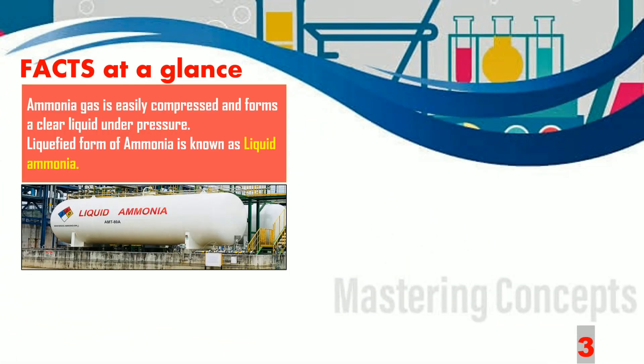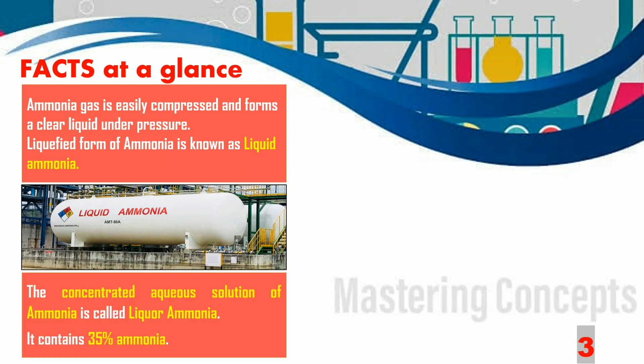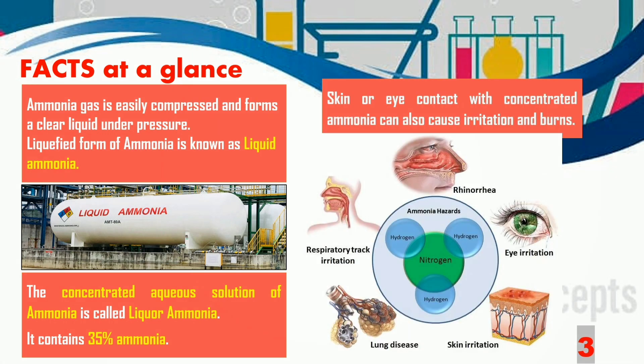Ammonia Gas can be easily compressed and it forms a clear liquid under pressure. This liquefied form of ammonia is known as liquid ammonia. Whereas the concentrated aqueous solution of ammonia is called liquor ammonia, which contains 35% ammonia — that is, 35 parts of ammonia mixed with 65 parts of water.